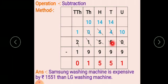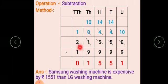14 minus 9 is 5. At hundreds place, 4 minus 9 is not possible, so we borrow from the thousands place. That 0 at thousands becomes 10; 10 minus 9 is 1. The 2 at ten thousands place becomes 1; 1 minus 1 is 0. So the answer is 1,551. Samsung washing machine is more expensive by rupees 1,551 than the LG washing machine.